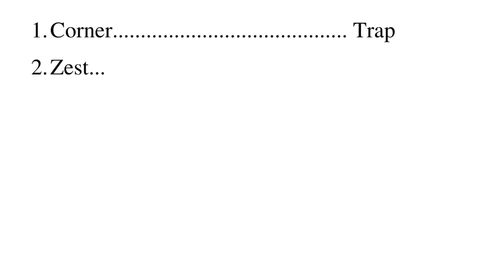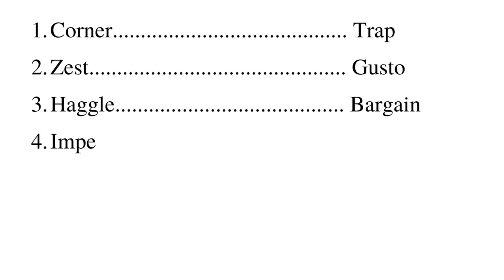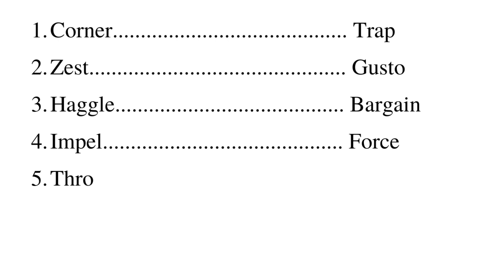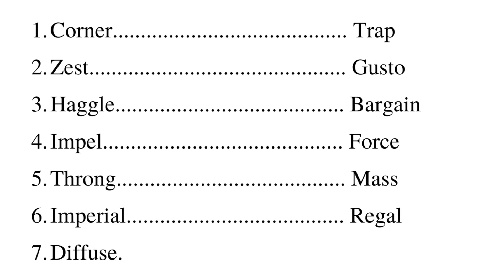Let's revise. Corner means to trap. Zest means gusto. Haggle means bargain. Impel means force. Throng means mass. Imperial means regal and diffuse means scatter.